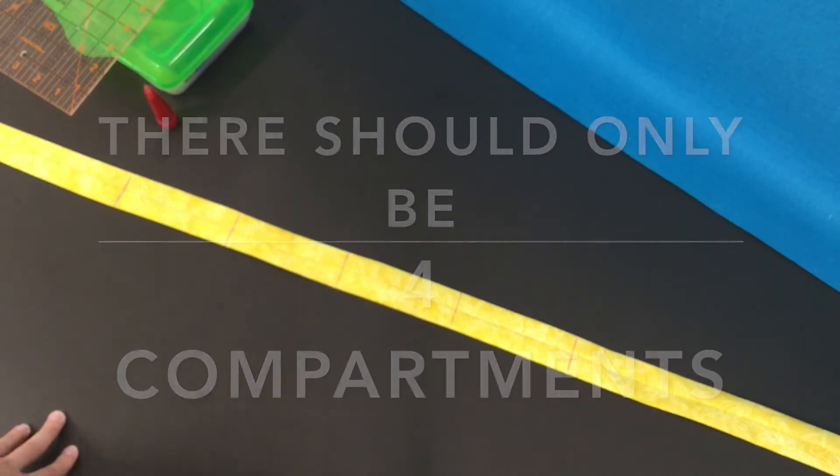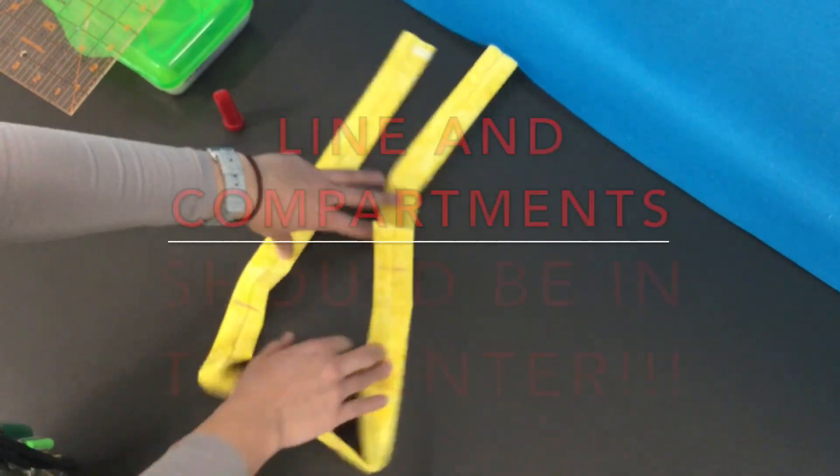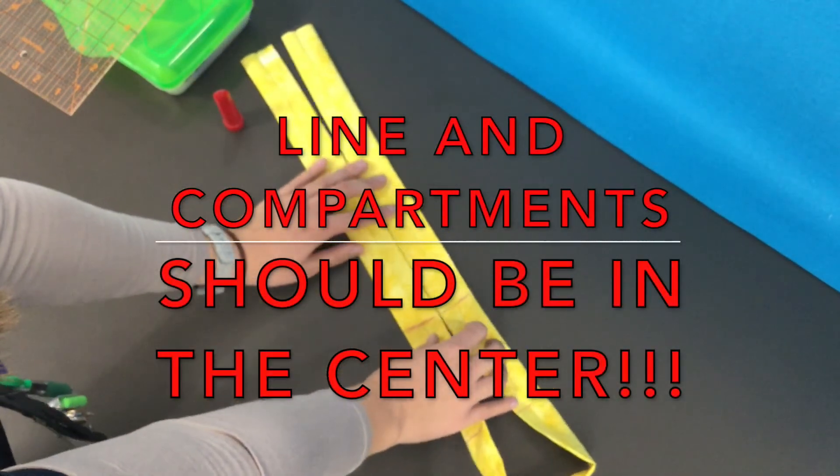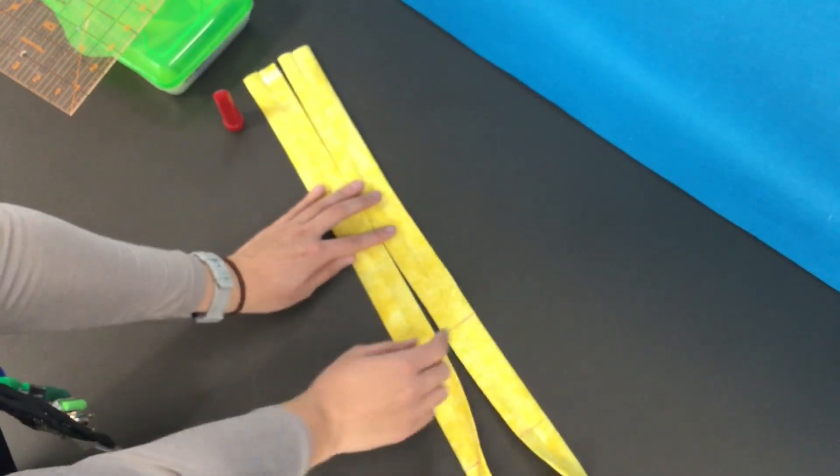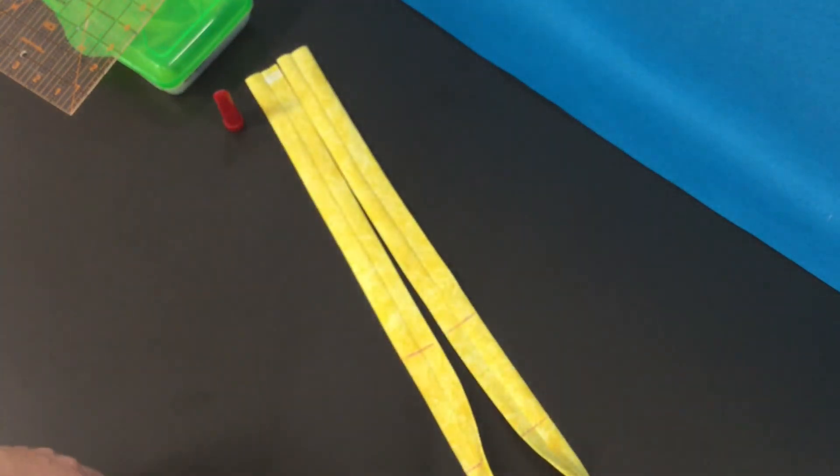Please make sure that your compartments are in the center. If you take the two ends, line up these two lines, you should have the same amount of fabric to the end of your tube. Okay, now we're ready to sew.